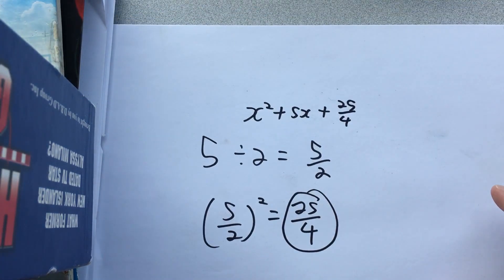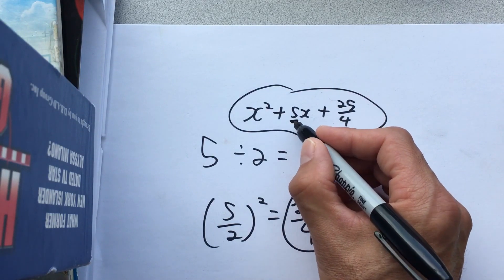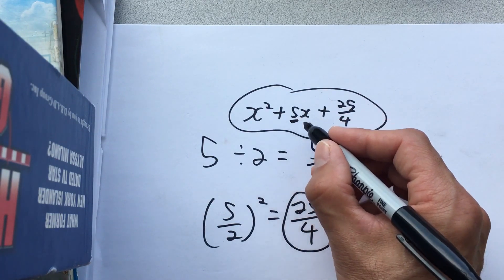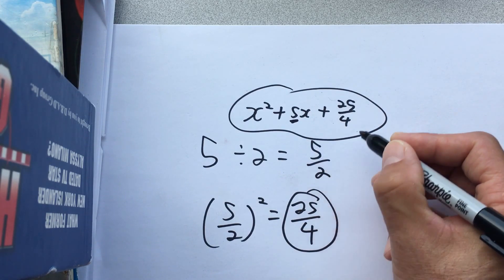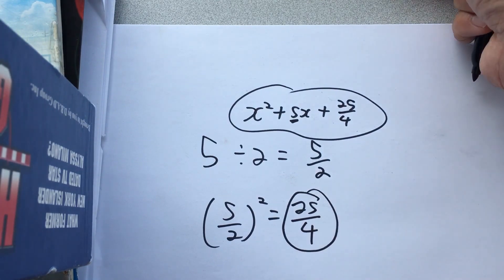And let me just remind you the criteria is this is a perfect square if half of this number squared gives you that number. Half of this number is 5 over 2, and 5 over 2 squared is 25 over 4. So I want 25 over 4.